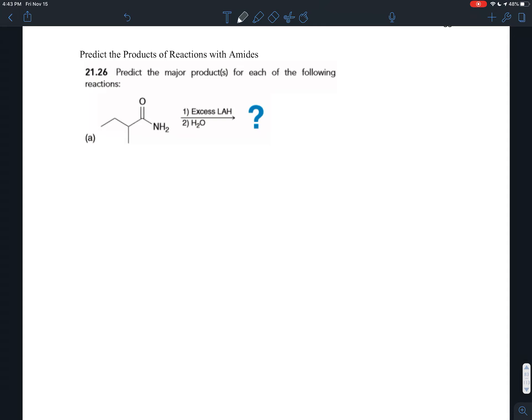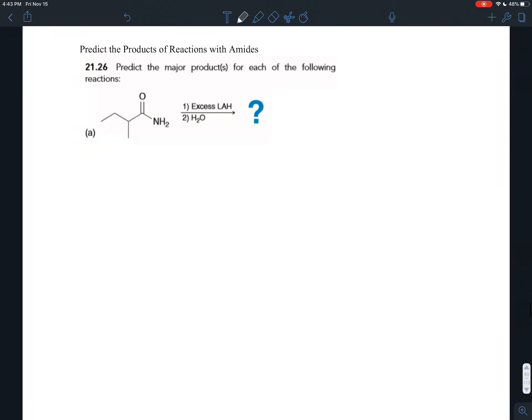These carboxylic acid derivatives are ordered in the homework according to their reactivity. First, acid halides. Second, acid anhydrides. Third, esters. Fourth and last, amides. There's also nitriles which are sort of a category unto themselves.